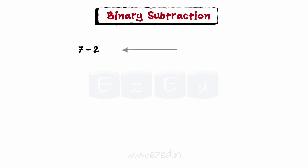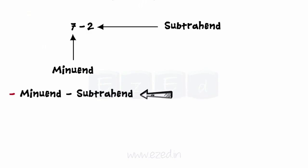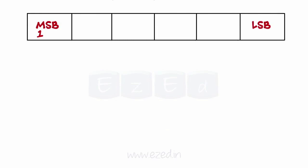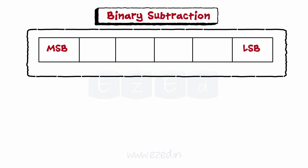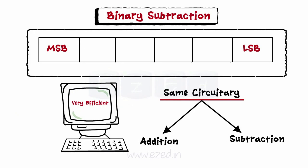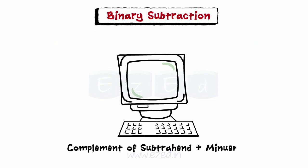Next, let us learn binary subtraction. When two numbers are to be subtracted, the subtrahend can either be subtracted directly from the minuend, as we do in decimal subtraction, or the complement of the subtrahend can be added to the minuend to obtain the difference. When the latter method is used, the addition will produce a high-order leftmost one in the result — a carry — which must be dropped. This is how the computer performs subtraction. It is very efficient for the computer to use the same add circuitry to do both addition and subtraction. Thus, when the computer subtracts, it is really adding the complement of the subtrahend to the minuend.